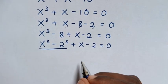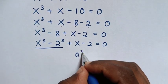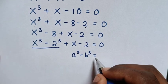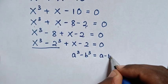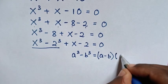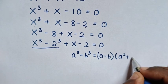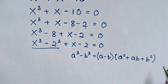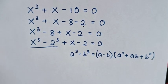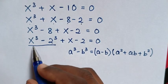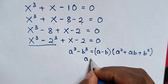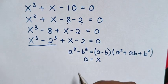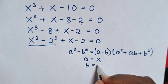Now from this part, we'll apply the rule: a power 3 minus b power 3 is equal to (a minus b) times (a squared plus ab plus b squared). When we compare a power 3 with x power 3, then a is equal to x, and when we compare b power 3 with 2 power 3, then b is equal to 2.